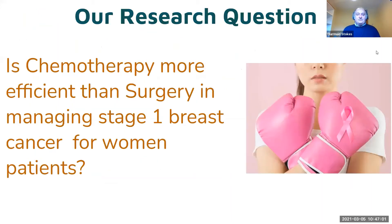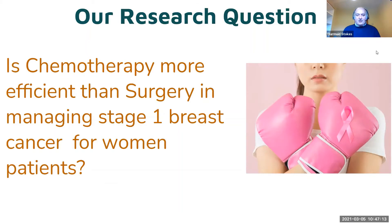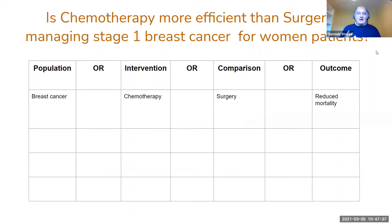Here's a simple research question example: Is chemotherapy more efficient than surgery in managing stage one breast cancer for women patients? Applying PICO: population is breast cancer, intervention is chemotherapy, comparison is surgery, and outcome is reduced mortality. The next step would be to think of all the possible ways of describing each of those PICO elements - alternative terms for breast cancer, chemotherapy, surgery, mortality, etc.